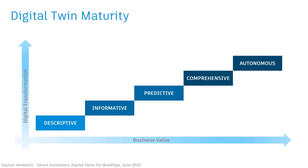Verdantec proposed a maturity model for digital twins comprised of five levels. The base level they call a descriptive twin, which is comprised of a live editable version of the design and construction data. Informative twins add operational and sensor data to the twin, making them a single pane of glass, and predictive twins begin to leverage that operational data for insights. Comprehensive twins add simulation for future what-if scenarios, and autonomous twins have the ability to learn and act on behalf of users and occupants. Each level requires a greater degree of BIM maturity and digital transformation, but each level also offers greater value to your business.